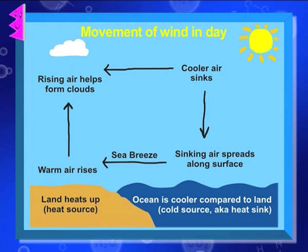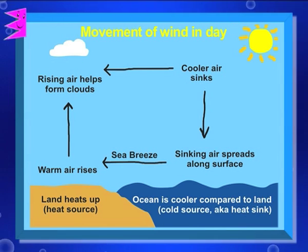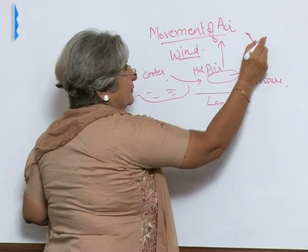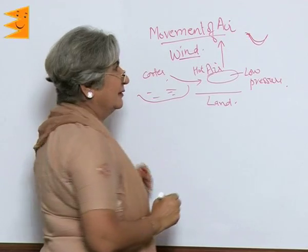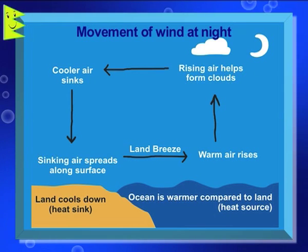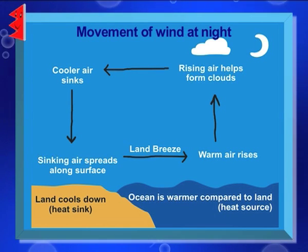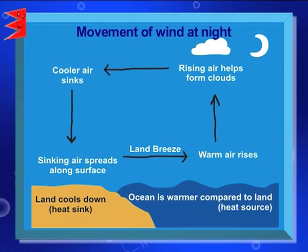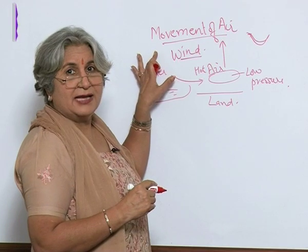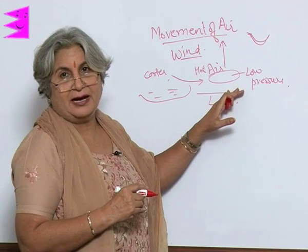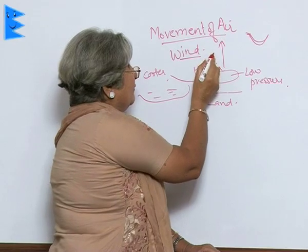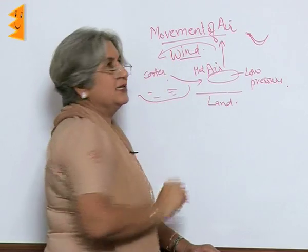So by evening, normally we have a cold breeze coming from the sea. Now what happens at night? At night the reverse will happen. The air above the sea will not cool easily, and as a result it will be hotter than the air above land, so it will go up. And the wind from land will come towards the sea.